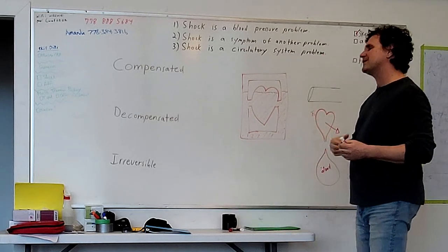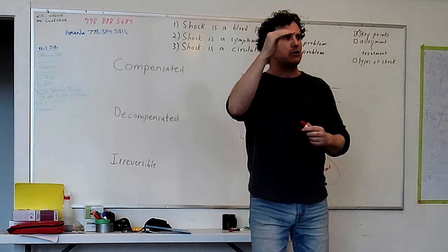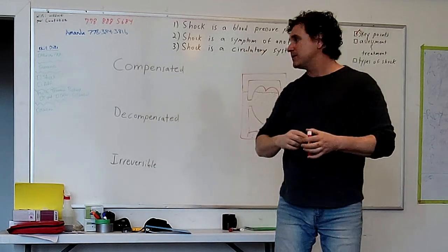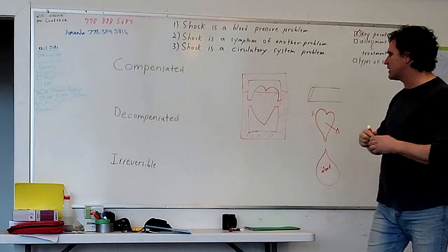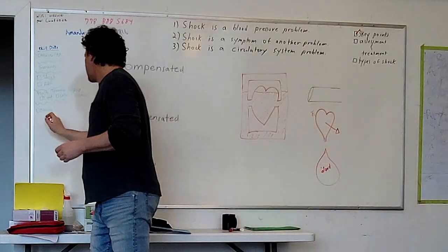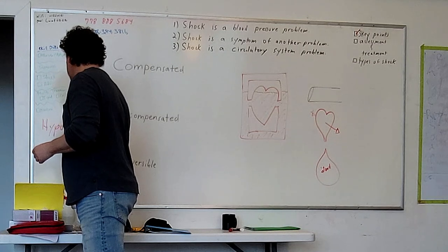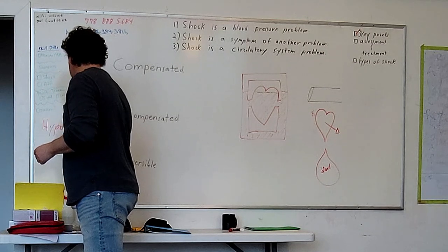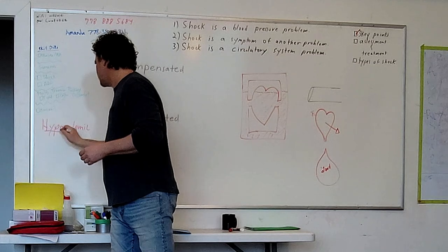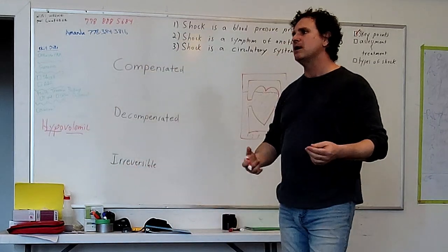Now, assessing and treating shock. To begin assessing shock, we understand the stages it goes through. Let's use the framework of hypovolemic shock — it's the one you'll understand the easiest. Hypo for low, volemic for volume: low blood volume shock. What's the most likely cause of someone having low blood volume? Their blood is in the wrong place — maybe in their abdomen, or on the floor in the next room.